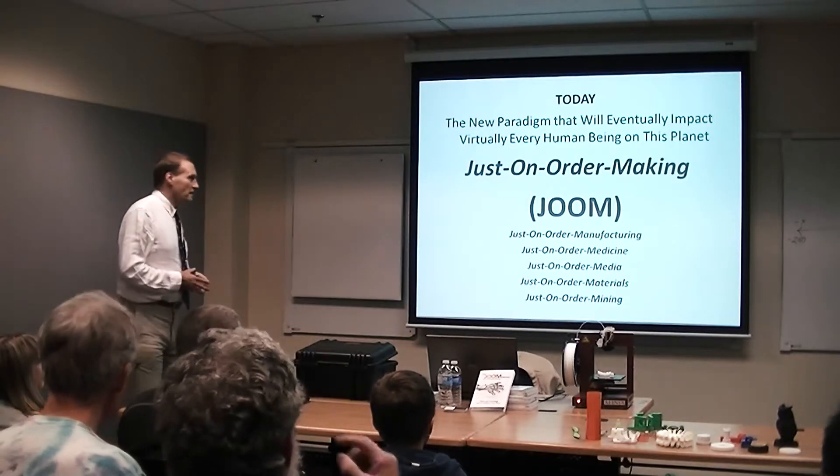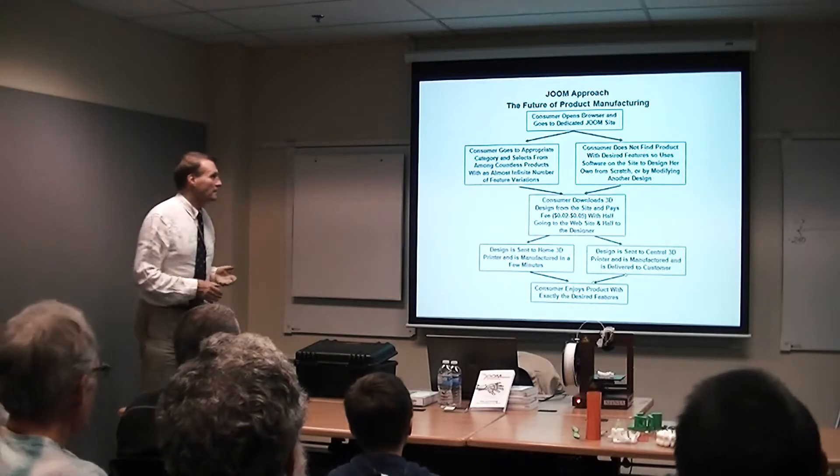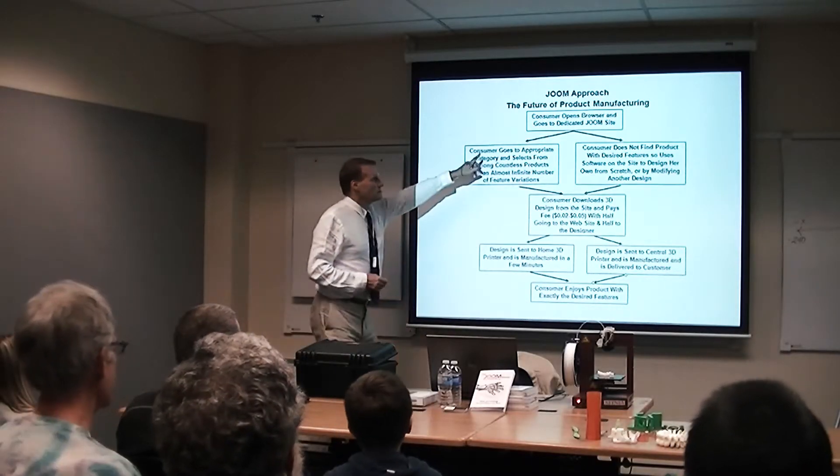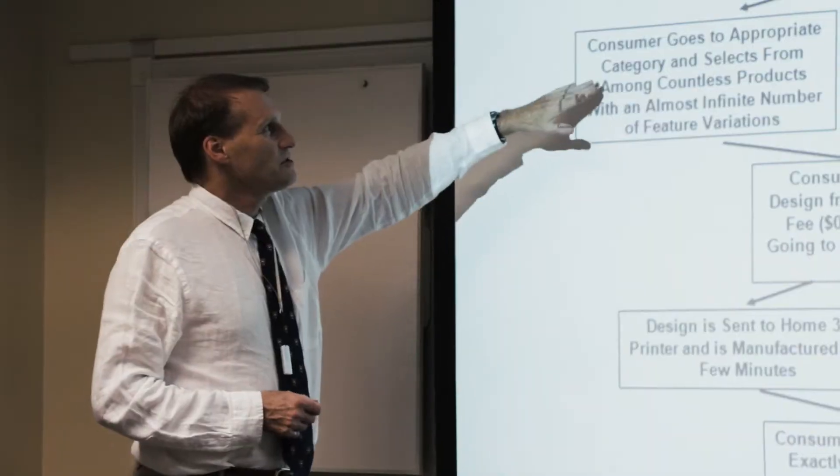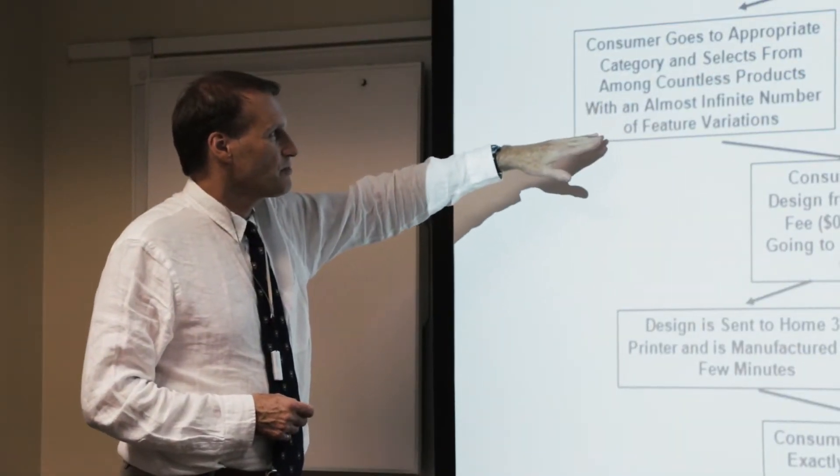So the new paradigm is called just-on-order making, which includes all of those things I've talked about. In the JOOM approach, the consumer opens the browser and goes to a dedicated JOOM site. The consumer goes to appropriate categories, selects from among the countless products.